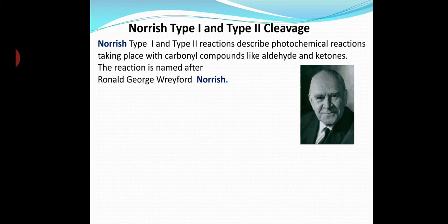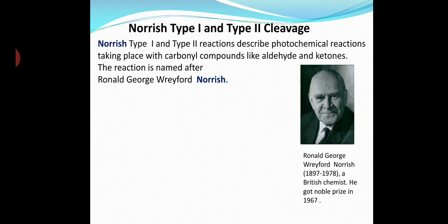This is the great scientist Ronald George Wreyford Norrish, a British chemist born in 1897 and died in 1978. He received the Nobel Prize in 1967 for studies of extremely fast chemical reactions affected by disturbing the equilibrium by means of a very short pulse of energy.